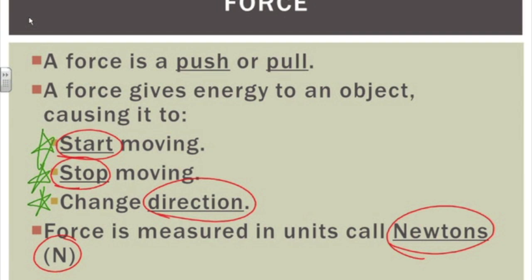Isaac Newton was a very brilliant scientist that lived long ago. He has a lot of things named after him, such as Newton's Three Laws of Motion — for every action, there's an equal but opposite reaction. He also came up with the concept of gravity. Even though gravity always existed, he's the one that put a name to it. You may have seen the cartoon of the apple falling from the tree and landing on top of Isaac Newton's head, giving him the concept of gravity. Newton was a very smart scientist, and the unit for force is named after him.